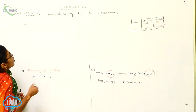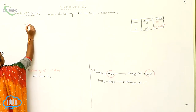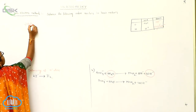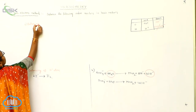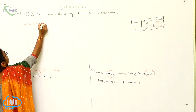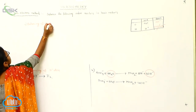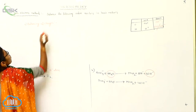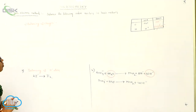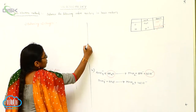The fifth step is balancing of charges. So for the balancing of charges, I can write here: